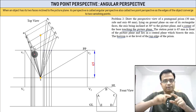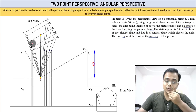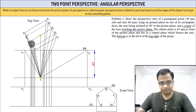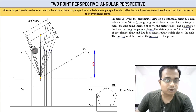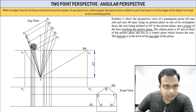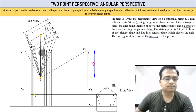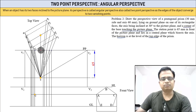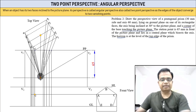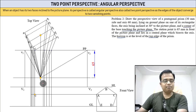Drop vertical lines from V1 and V2 down to the horizon level — those are capital V1 and V2. Now join all ten corners, from A to E and A1 to E1, to the station point. The intersection points with the picture plane are what we're interested in. Drop vertical lines from all these intersections.